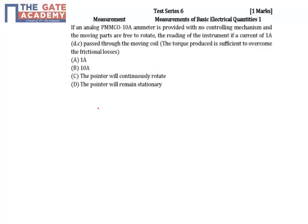In the given problem, the meter is a PMMC meter, but there is no controlling torque. If there is no controlling mechanism, it means there is no controlling torque. If there is no controlling torque, what will happen? The meter will not settle at one particular point. You should keep that in mind.